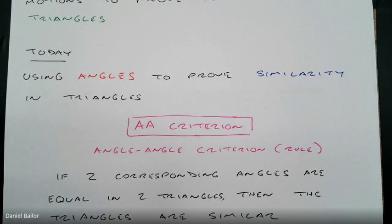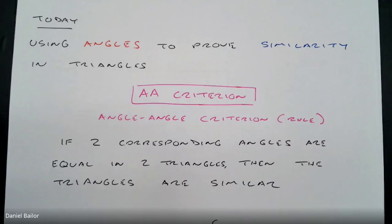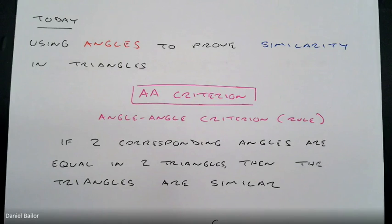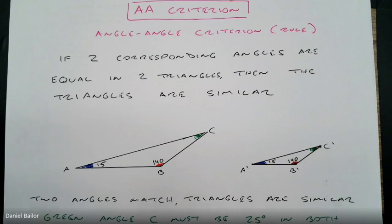The AA Criterion — the angle-angle rule — means you're checking to see if two angles are the same. If two corresponding angles are equal in two triangles, then the triangles are similar. Let me show you an example I drew right here.